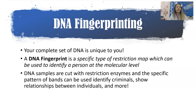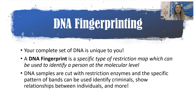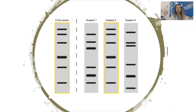We can use that restriction map to make conclusions. Your complete set of DNA is completely unique to you, so your DNA fingerprint — just like your fingerprint — is completely unique. A DNA fingerprint is a specific type of restriction map used to identify a person at the molecular level. DNA samples are cut with restriction enzymes, and your specific band pattern is used to identify you. We use this in forensic science to identify suspects from crime scenes or show relationships between individuals.